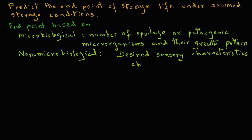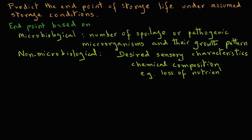On the other hand, criteria related to the chemical composition of the food are somewhat easier to establish. For example, the loss of some nutritional component may be measured using routine tests during a certain storage period.